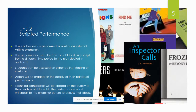Unit 2 is a scripted performance, worth 20% of the GCSE — Unit 1 was worth 40%. The scripted performance is based on a performance done to an external visiting examiner from a published script. Again, students can choose to do either performance work or be assessed on the lighting or the costume.